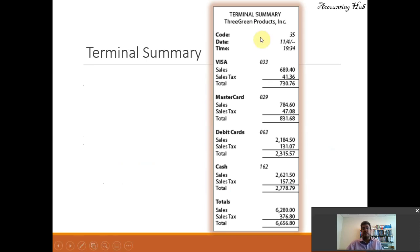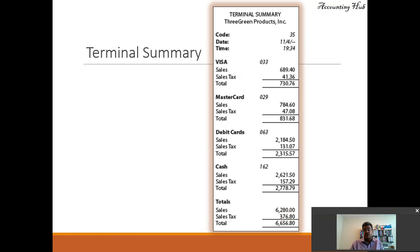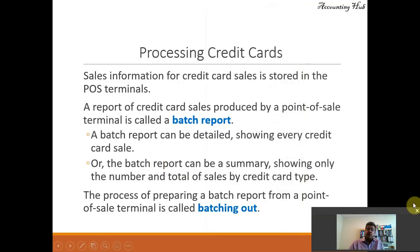The terminal summary for these products includes: date, a code, date, time, Visa sales, sales tax, total, MasterCard, debit cards, cash, and totals. We will record only the total — we don't need to record all of the individual transactions. We record it at the end of the day, usually.